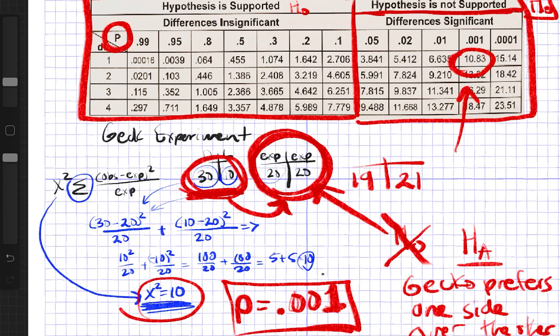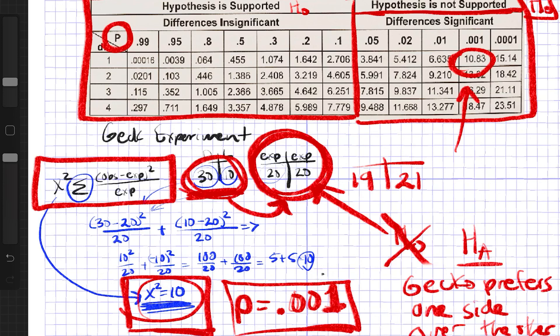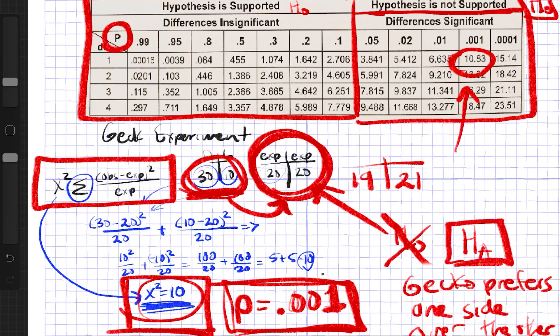To get full credit for the gecko statistical analysis, you had to report the chi-squared statistic — explicitly writing it out as stated in the instructions. You also had to report the statistics: the chi-squared statistic and your p-value. You needed to state the significance of the p-value, state what it meant, state which hypothesis was supported, and basically give a clear signal that you understood this whole process through and through.